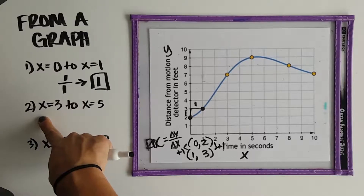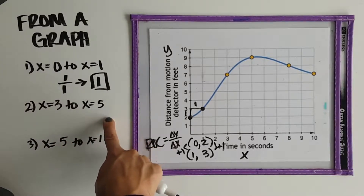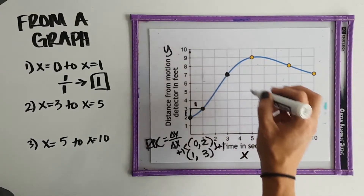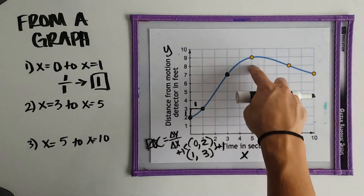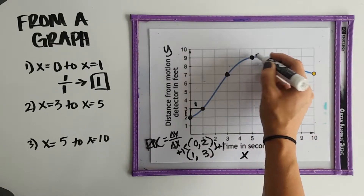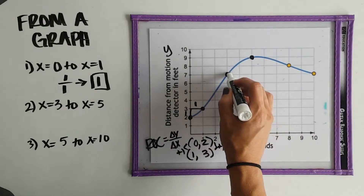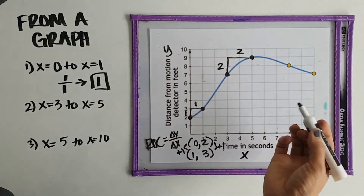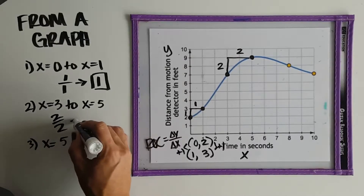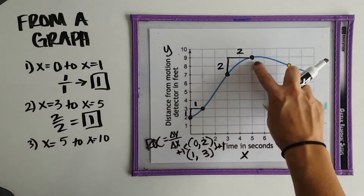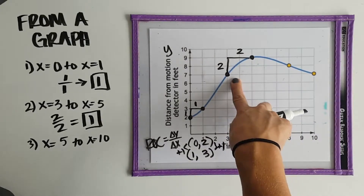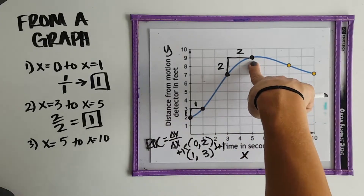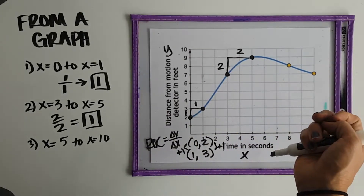From x equals 3 to x equals 5: at 3 seconds we're at 7 feet from the motion detector, and at 5 seconds we're at 9 feet. Change in y is up 2, change in x is right 2. Rate of change is 2 divided by 2, which is 1. So on this interval we have an average rate of change of 1 foot per second. The graph is curvy so it's not constant, but on average we're increasing distance at the same rate.